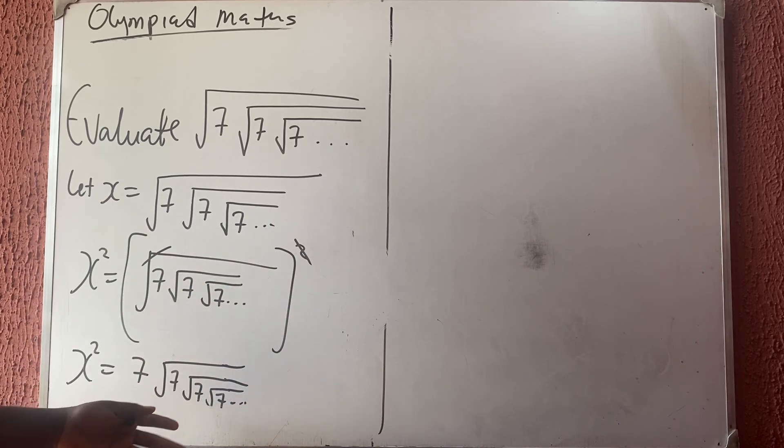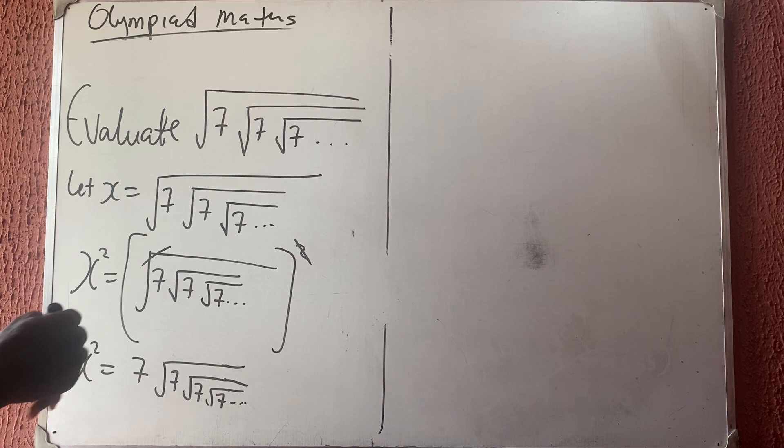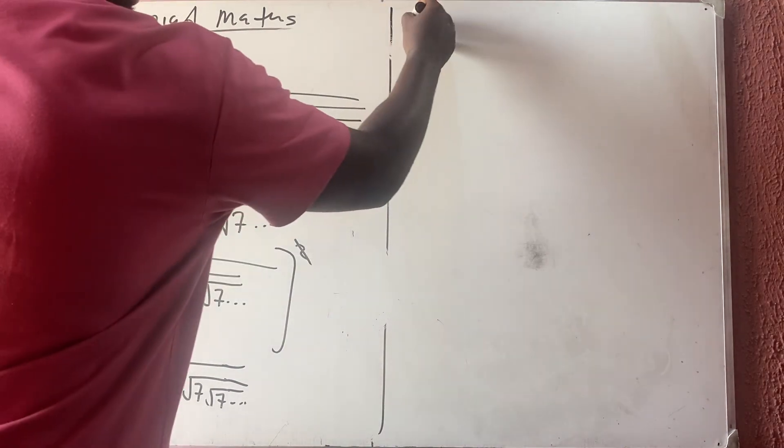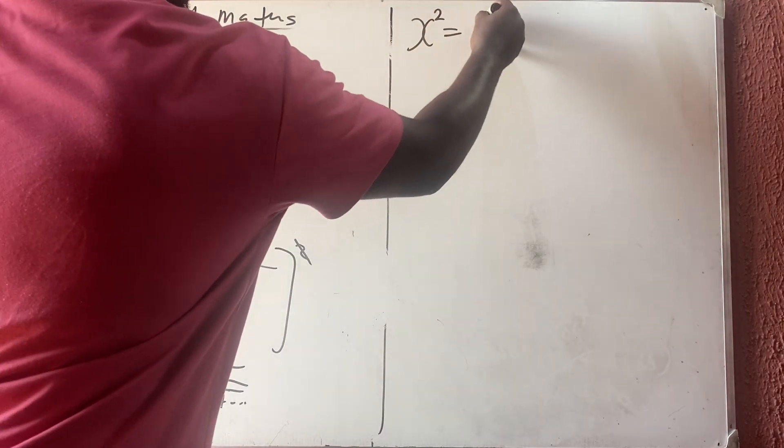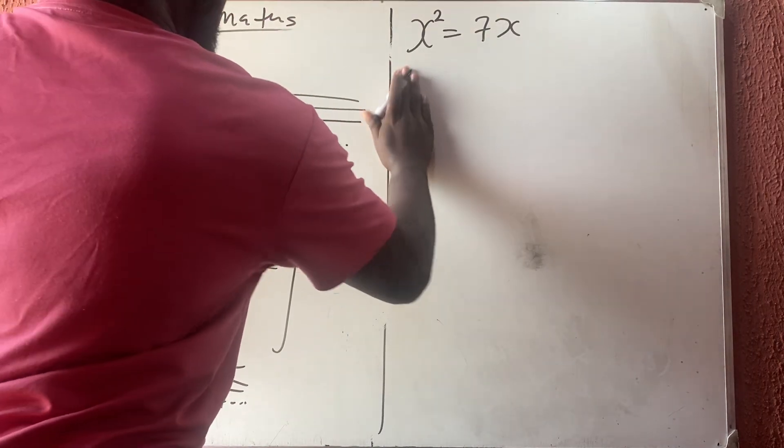Even if you remove another one, it will still be the same thing because it continues to infinity. So if I say that this is equal to x, x² equals 7x. Now I'm bringing this one to this side, I have x² minus 7x equals 0.